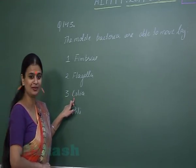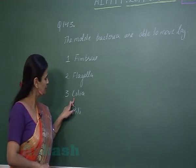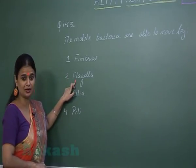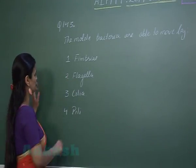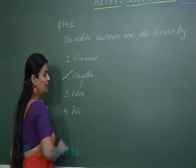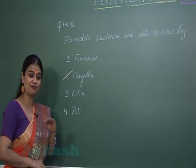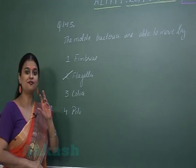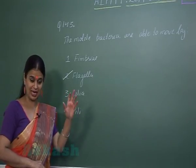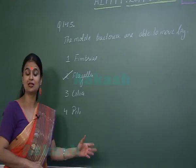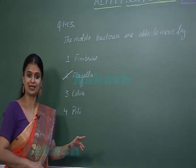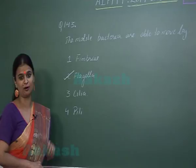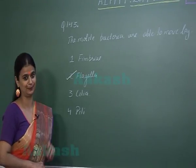Cilia are absent in bacteria. The structure which helps bacteria in motility and locomotion is flagella. In bacteria, the flagella is made up of flagellin protein. Comparing with eukaryotic flagella — eukaryotic flagella is made up of tubulin protein.